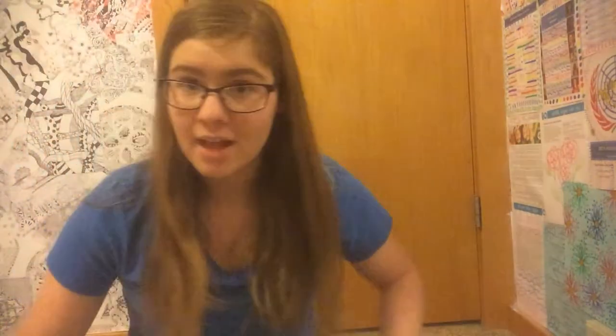Transgenic organisms are organisms with genes from other species. Cloning is creating genetically identical organisms. Steps of cloning: the egg cell is taken from the female and its nucleus is removed; donor DNA is taken from the animal to be cloned; the nucleus from the clone is put into the egg cell; the new cell is allowed to divide mitotically forming an embryo; the embryo is implanted into the foster mother's uterus where it continues to grow and develop.